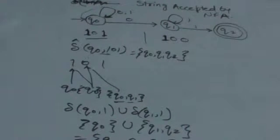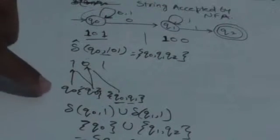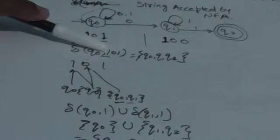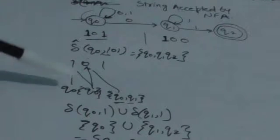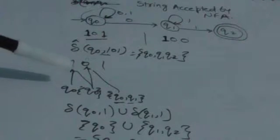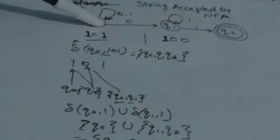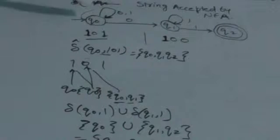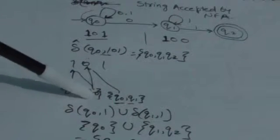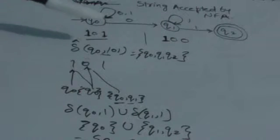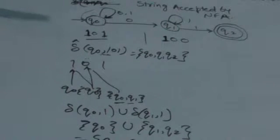For this we will use the extended transition function. The current state is Q0 and the first input symbol is 1. When the machine reads 1 and its current state is Q0, see the transition — the machine will remain in state Q0. So when it reads 1 it will remain in state Q0.